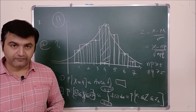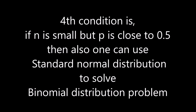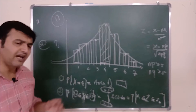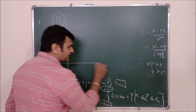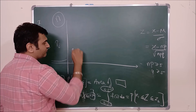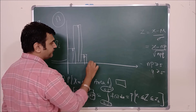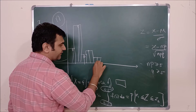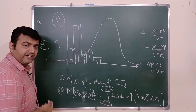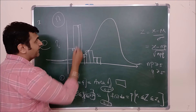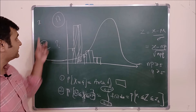So these are the three conditions one can think of. One can't always use normal distribution. Why? For example, if you have a probability distribution like this and try to draw the rectangle, and then try to draw the normal curve — can you get a good approximation? The answer is no, because here the area of the rectangle is huge, whereas the area under the curve is only this much. That's why these three conditions are required.